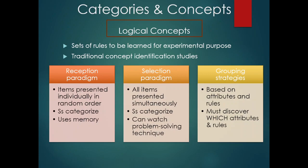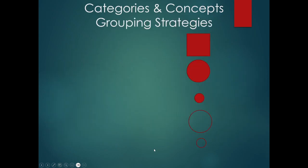In grouping strategies, we've got all the items presented simultaneously and we're going to see the person, and actually they might be presented in stages. I'm going to give you an example where it's presented in stages, but the person needs to group the items based on some kind of attribute or some kind of rule that's been provided or that they have to discover on their own. They have to figure out what the theme is. What is the rule that's governing this?